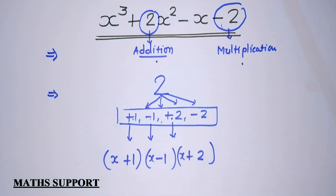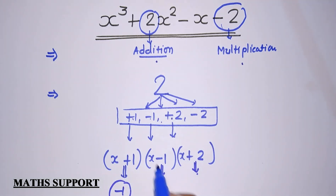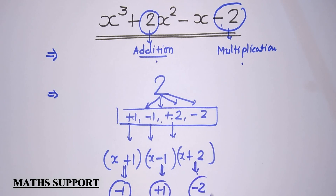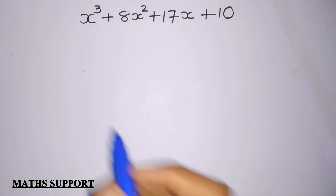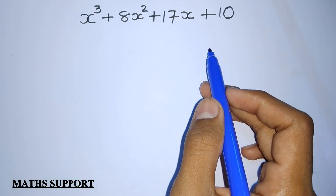That's a very simple trick for factorization. If you want to find the zeros, you have the factored form: zeros will be minus 1, plus 1, and minus 2. Now suppose you want to factorize another cubic polynomial.